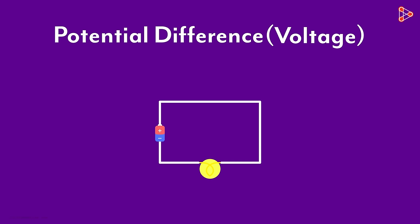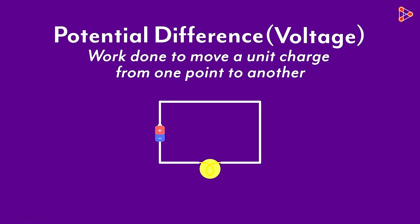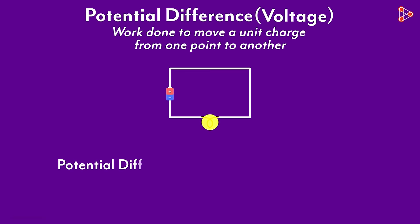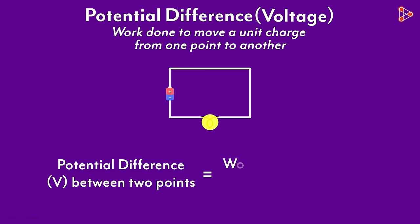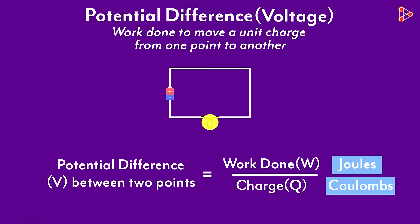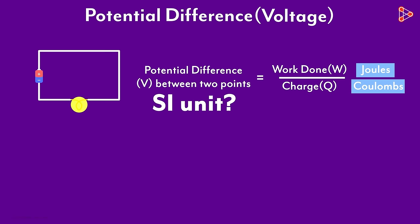If we have to understand the technical definition, we would say that it is the work done to move a unit charge from one point to another. The potential difference V between any two points in an electric circuit will be the work done over the charge Q. We know that work is measured in joules, and charge is measured in coulombs. What's the SI unit of potential difference then?